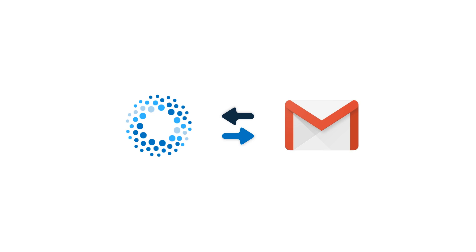Once you've installed the add-on, you'll see a new icon in your Gmail interface. Simply open an email and click on the AI Mail Assistant icon.